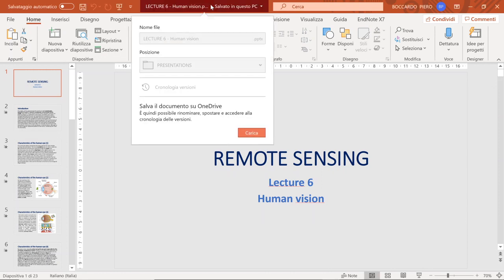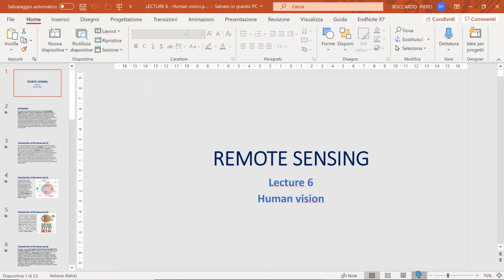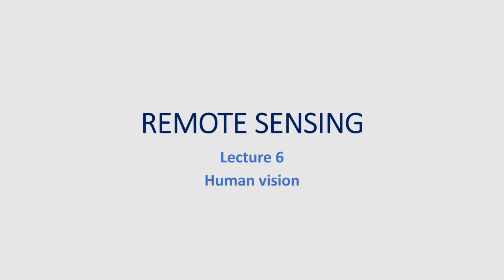Good morning everybody. Today we are going through a very particular topic. We are at lecture number six and today we will deal with human vision. Why human vision? Because we are in front of our PC screen in order to process and to try to get information from our images, and we need to fully understand how human vision works in order to understand its advantages and disadvantages.